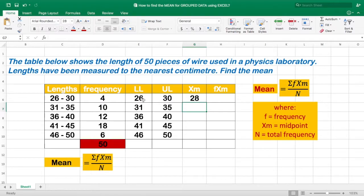So if you will check that, 26 plus 30 is 56, divide by 2 is 28. So instead of adding all of them and dividing it by 2, just drag it down, and you got the midpoint of all the classes.